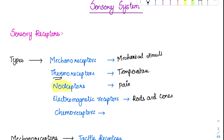Then coming to the chemoreceptors — these are chemical sensors that are going to sense chemicals. The chemical sensors in the body include taste and olfaction. Other types of chemical receptors also exist, like those sensing O2 and CO2, which we will see in the respiratory system.